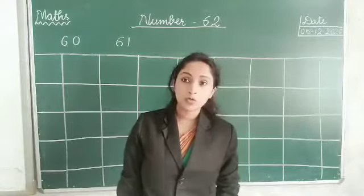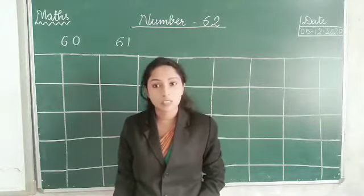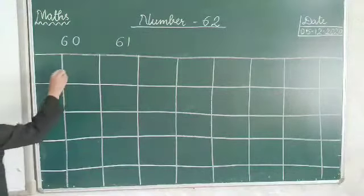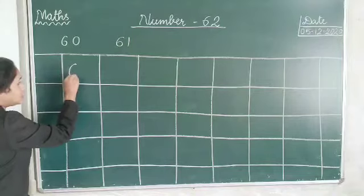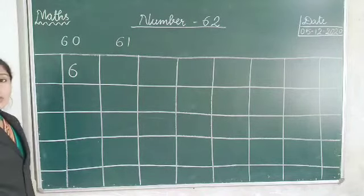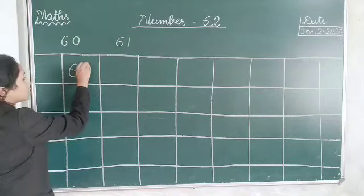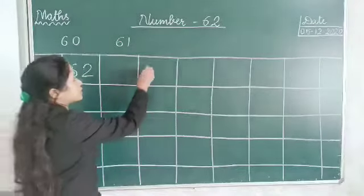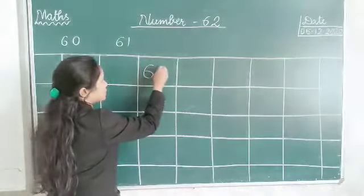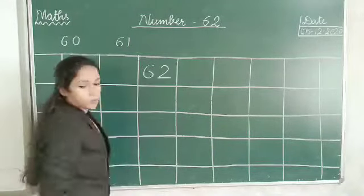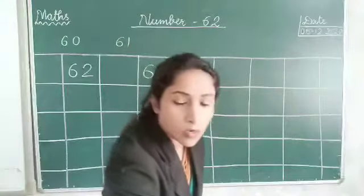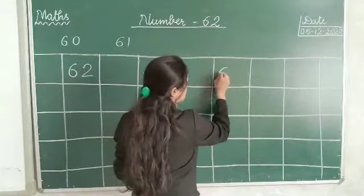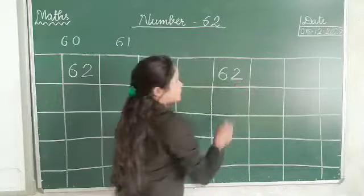62. How to write 62? First you have to write 6, then 2. 62. Okay? 62.